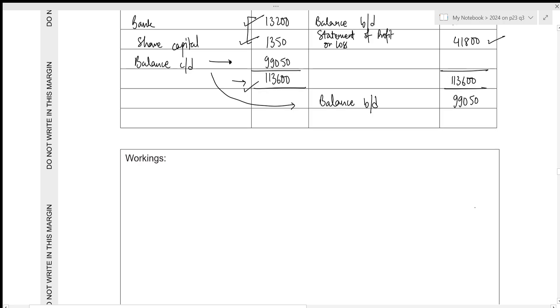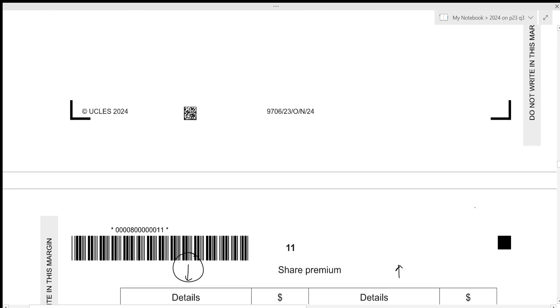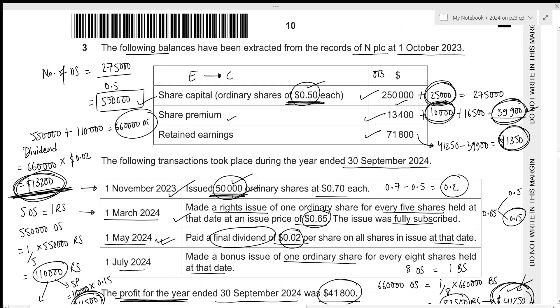We had been given a working section as well, so instead of scribbling all over the question paper, you need to show all of your workings within that particular box so that you get your marks correctly.